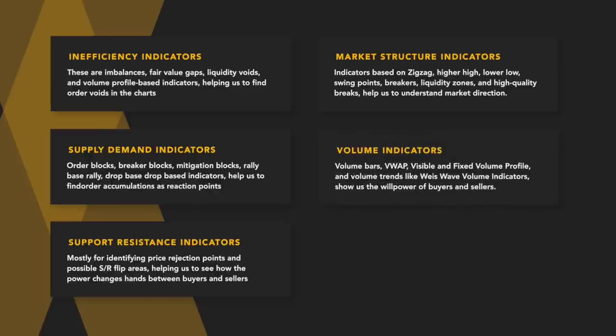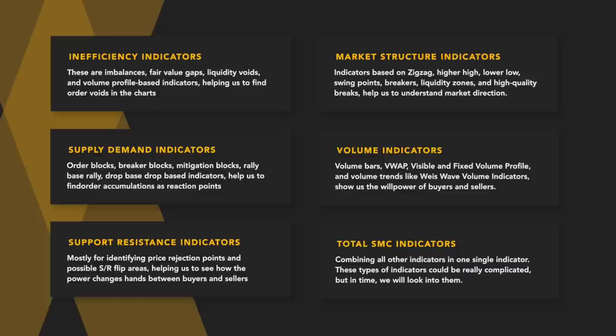Fifth, volume indicators — volume bars, VWAP, visible volume profile, fixed volume profile, and volume trends like wave volume indicators, showing us the willpower of buyers and sellers. Sixth, total SMC indicators combining all other indicators in one single indicator. These types of indicators could be really complicated, but in time we will look into them.